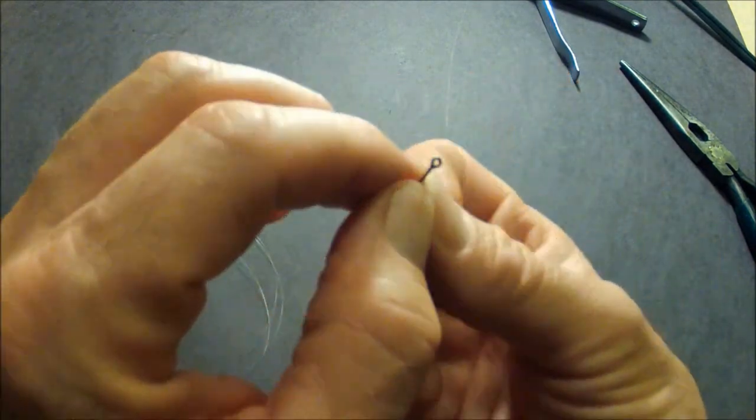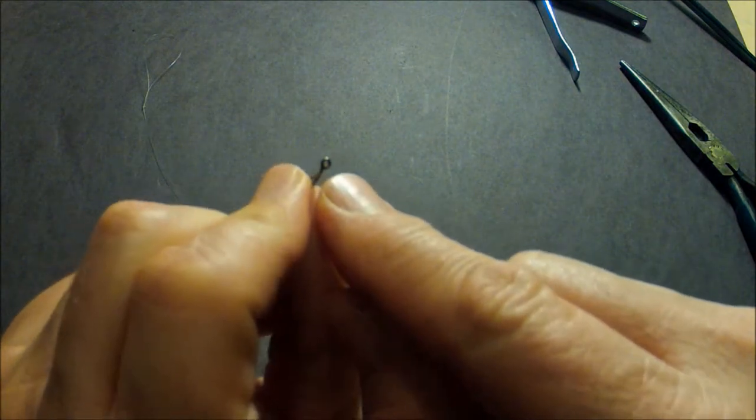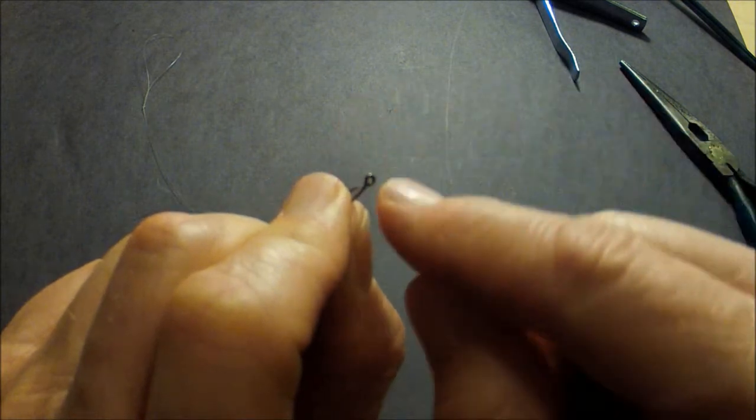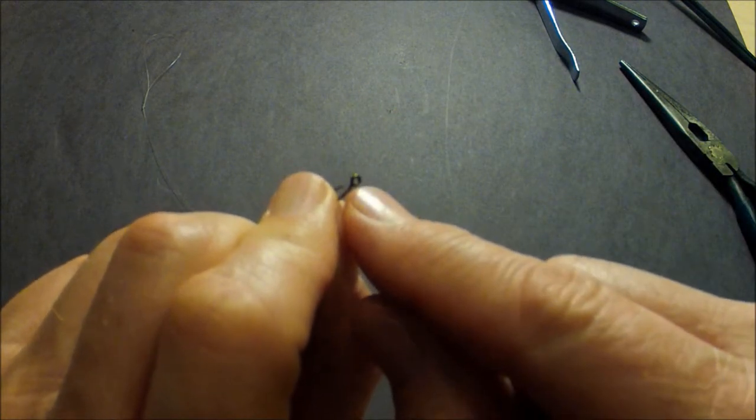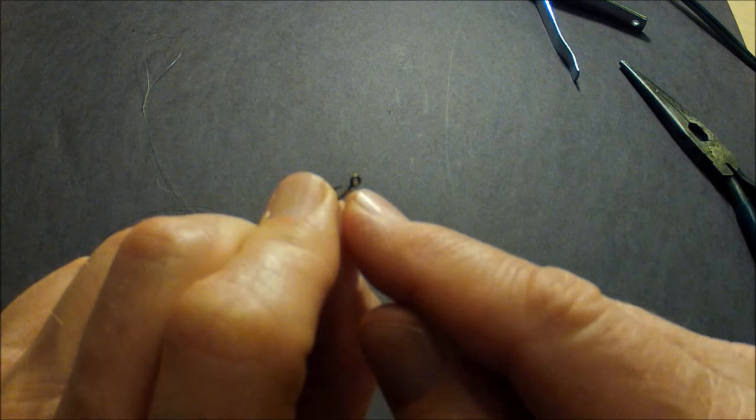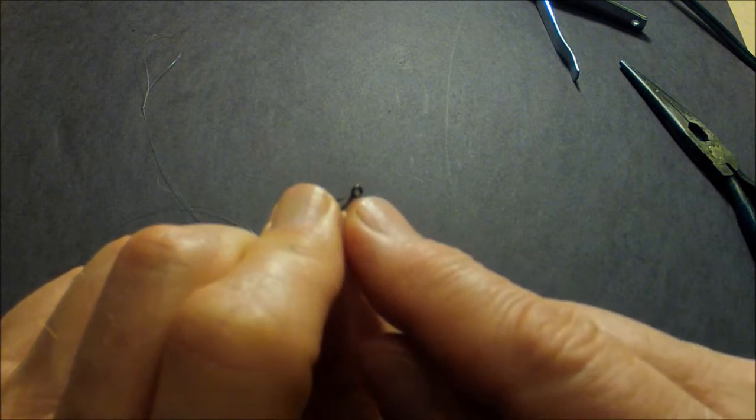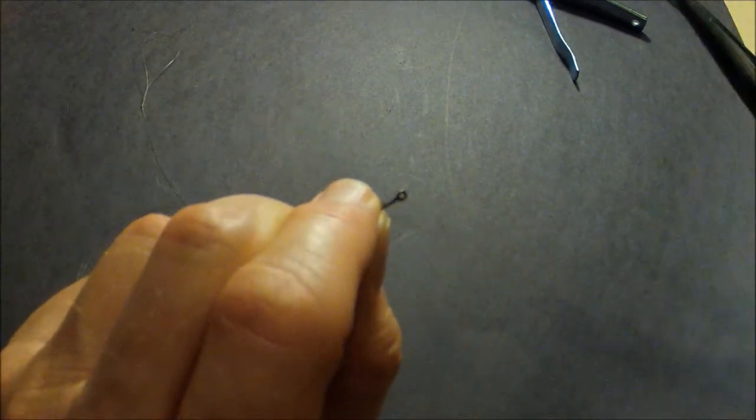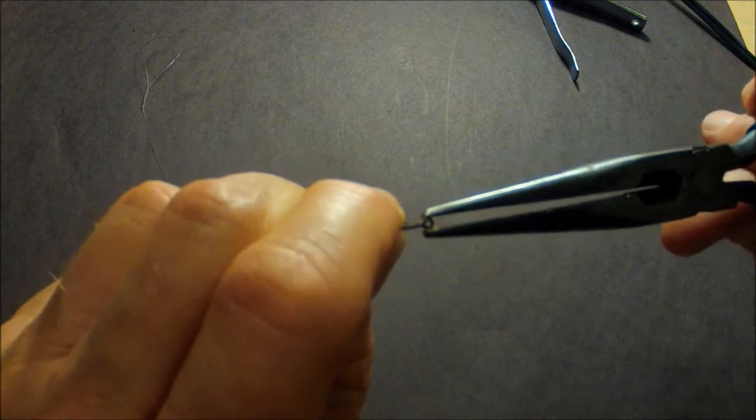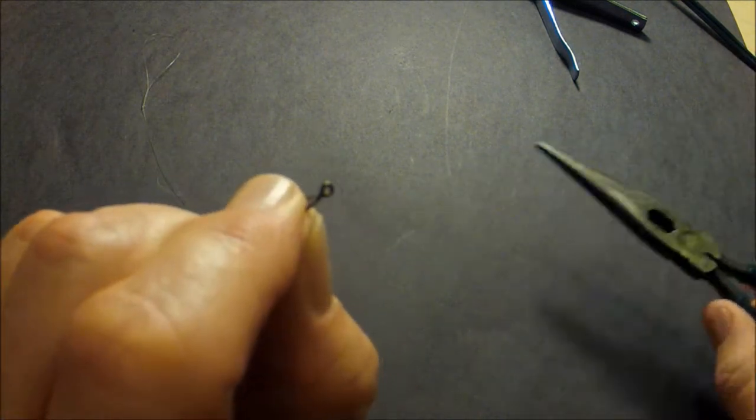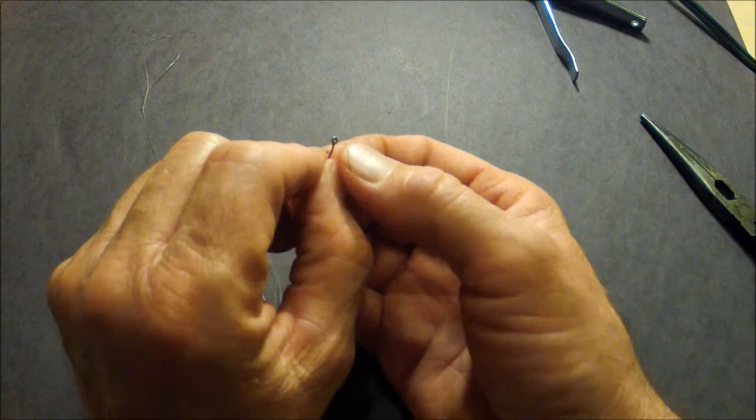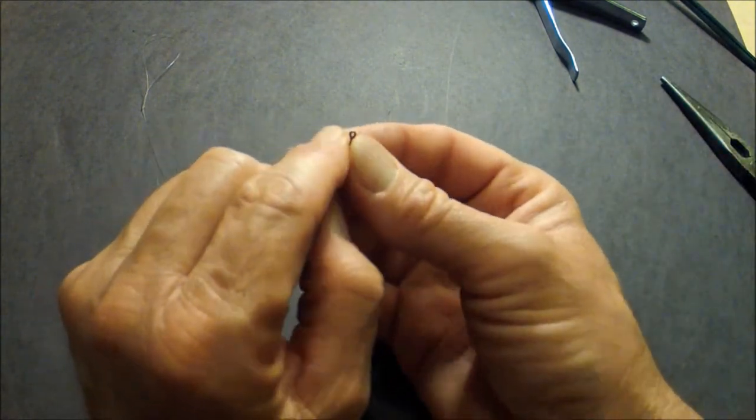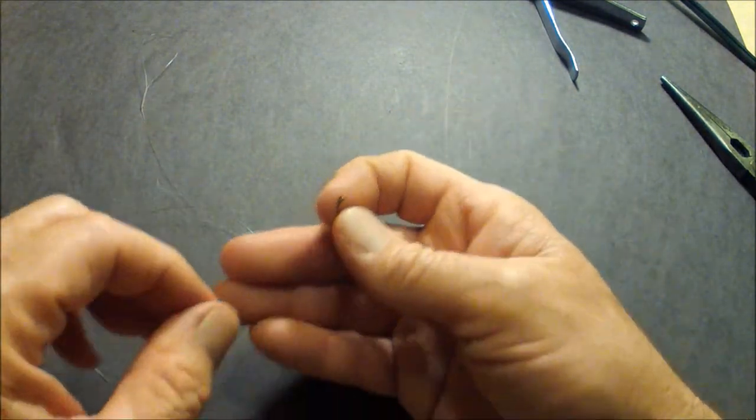But before we get started we want to look at the hook and make sure, because it comes from the factory doesn't mean that all of these hooks are perfect. A lot of times the eyelet around this hook will have a space at the end of the eyelet there, and when it does it can create a situation for you that could be traumatic if you lost a fish. So if that were to happen you want to take your needle nose pliers and just cinch it and make sure that that eyelet is cinched down and there is no gap there. This hook does not have a gap and it's basically manufactured from the factory and it looks great.